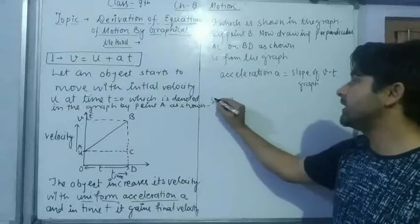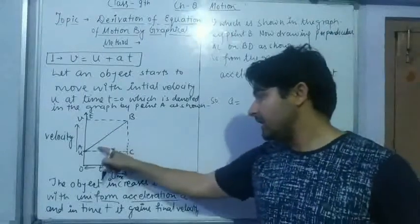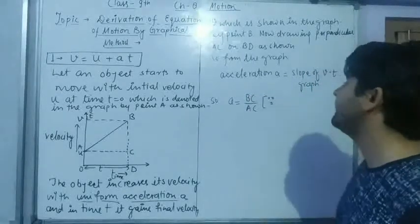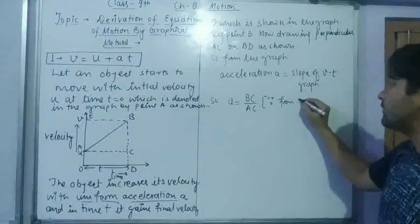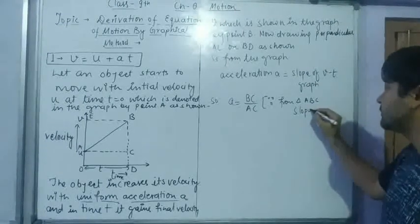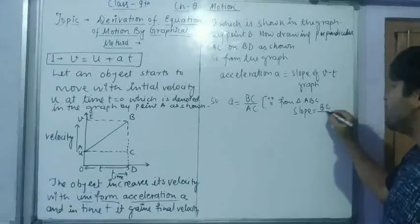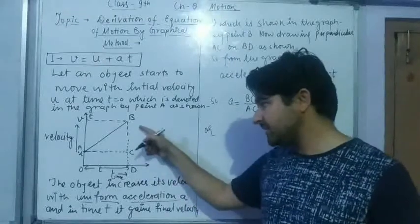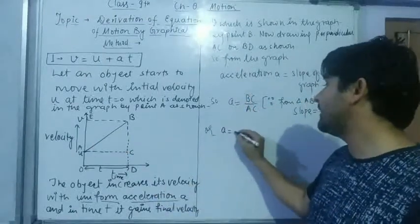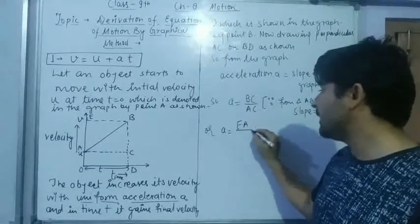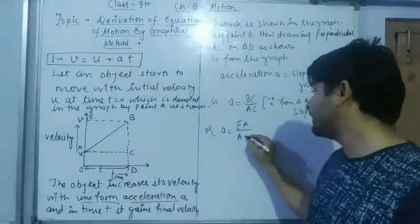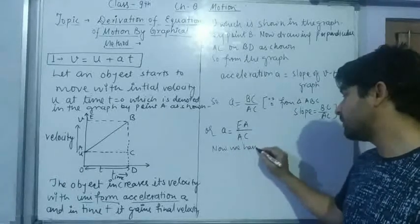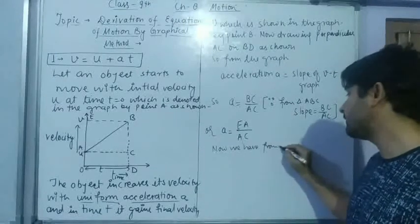So acceleration equals to, from triangle ABC, slope is equals to BC upon AC. यह चीज हम लिखेंगे। BC की जो value होगी वह EA के बराबर होगी। So we will write: a = BC/AC = EA/AC. Now we have from the graph — EA की value अगर हम EO में से AO minus कर दें, तो हमारे पास EA बचेगा।